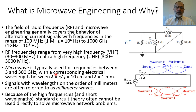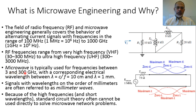Specifically, for wavelengths less than 1 cm, we call this frequency range millimeter waves. Signals with wavelengths on the order of millimeters are often referred to as millimeter waves. Effectively, millimeter waves start from 30 GHz to 300 GHz. This is what we call microwave signals.